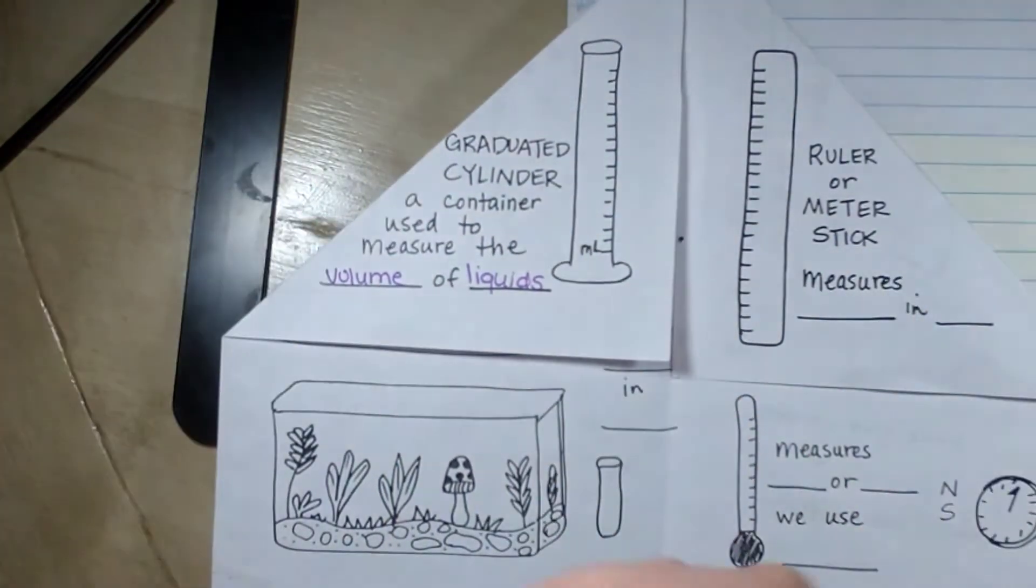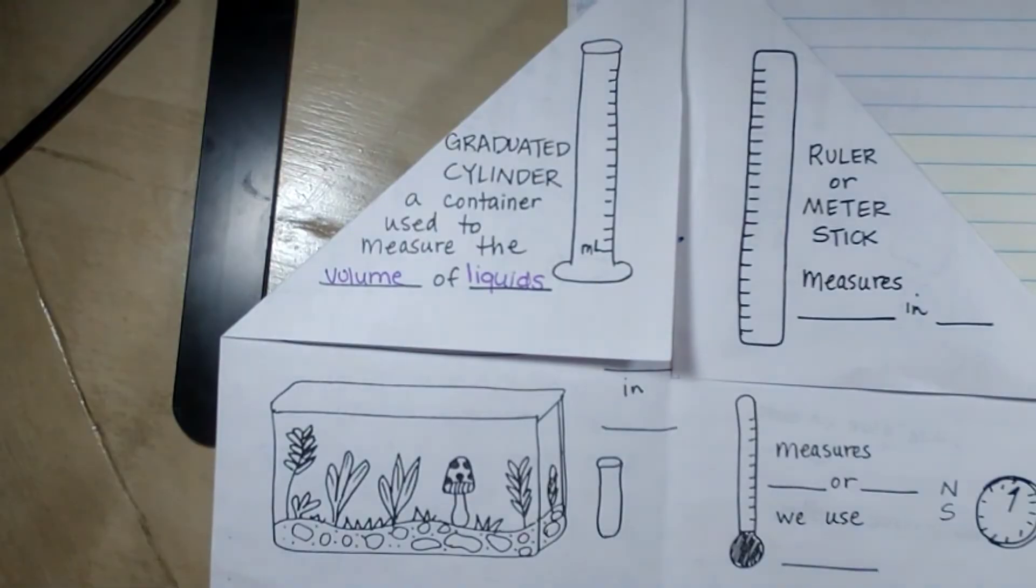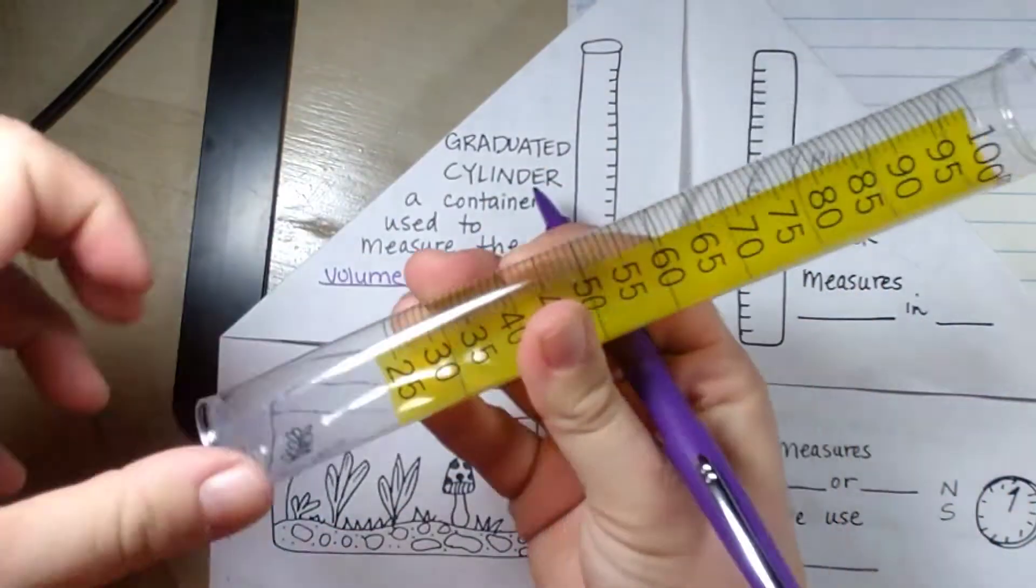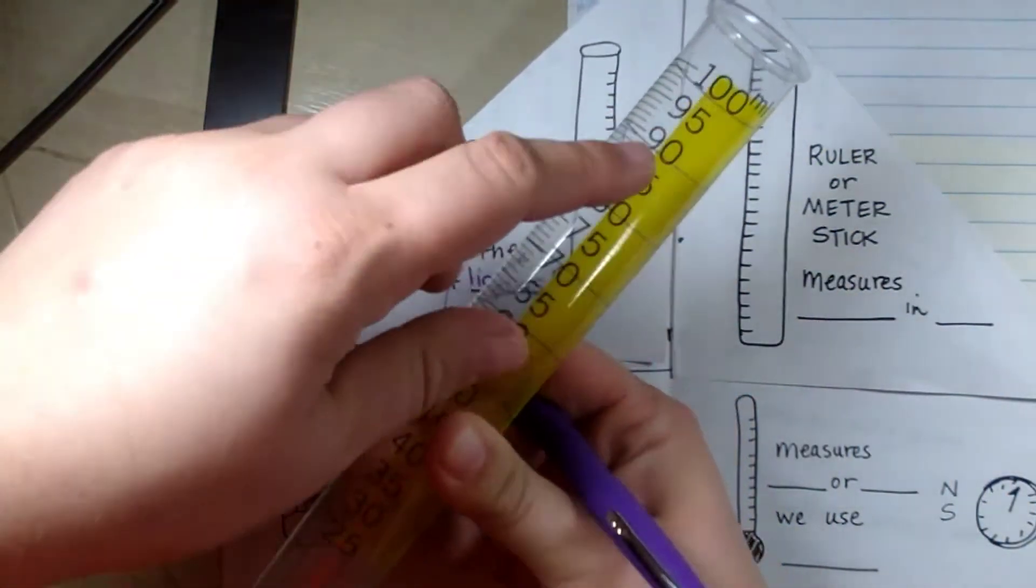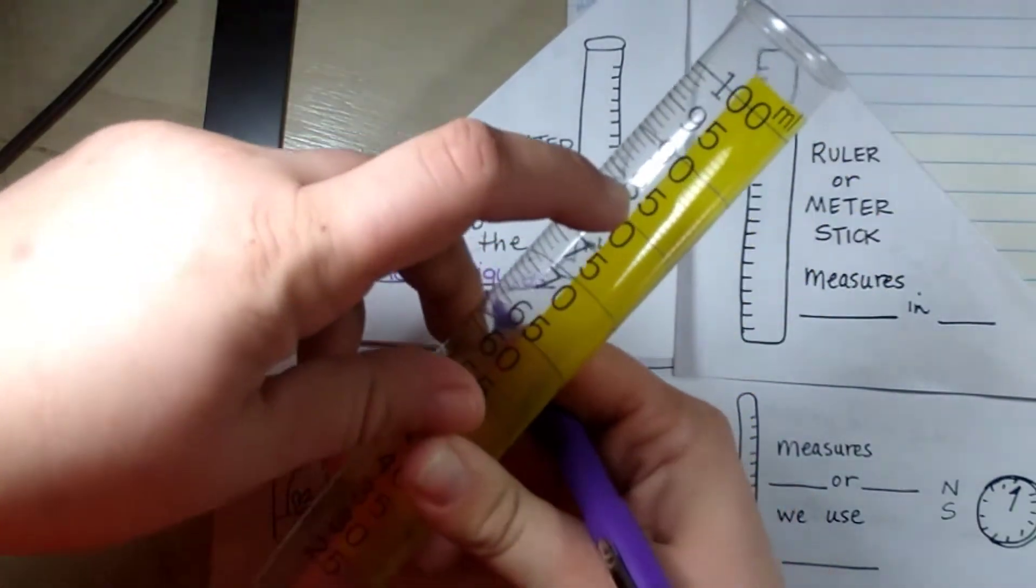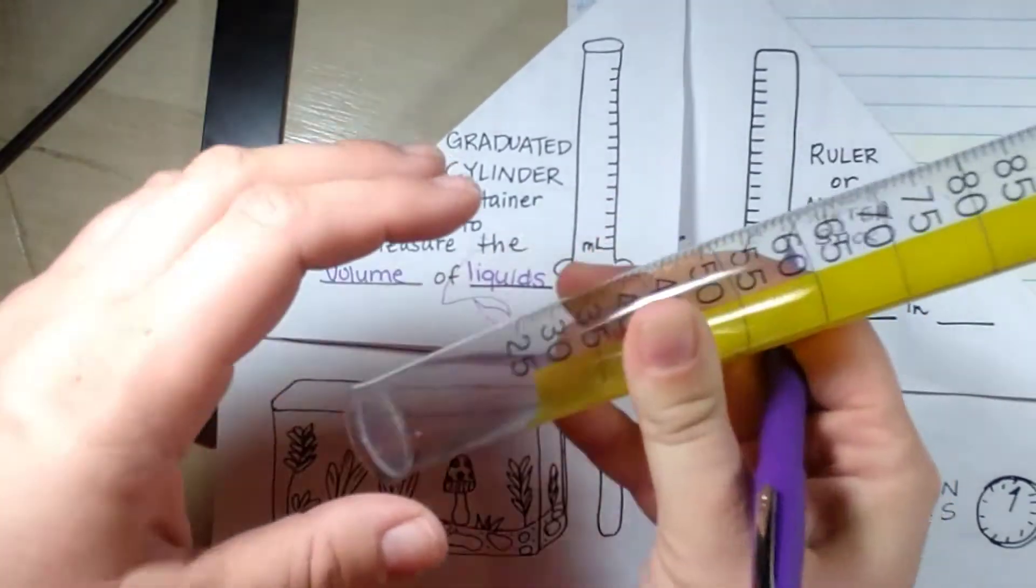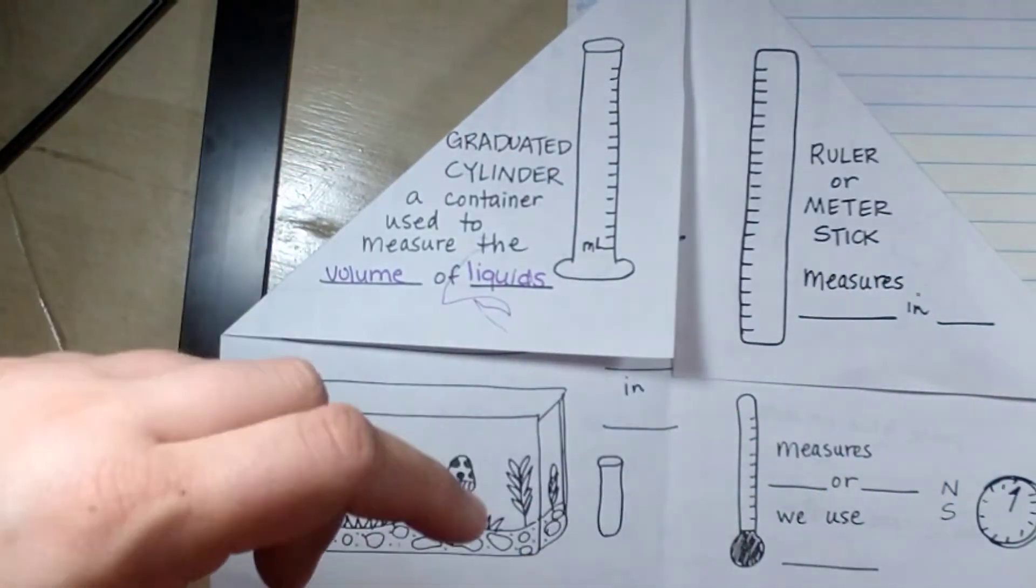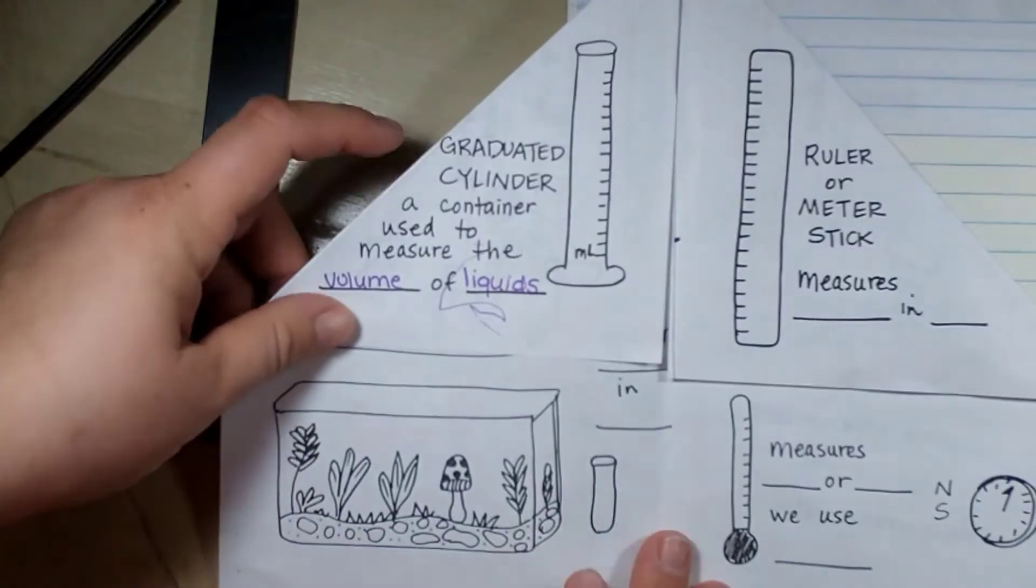Volume is how much space the liquid takes up. So I would take this and I would fill it up with water and I would measure it. If it went up to the 85, then it would mean that it was 85 milliliters. So you pour the water in and you measure it.